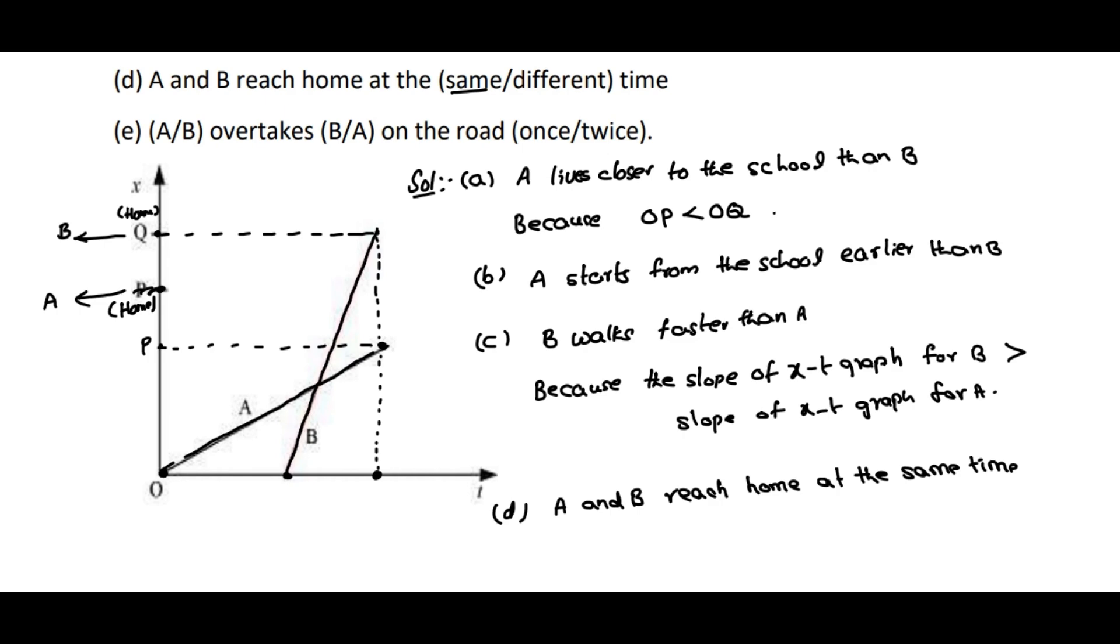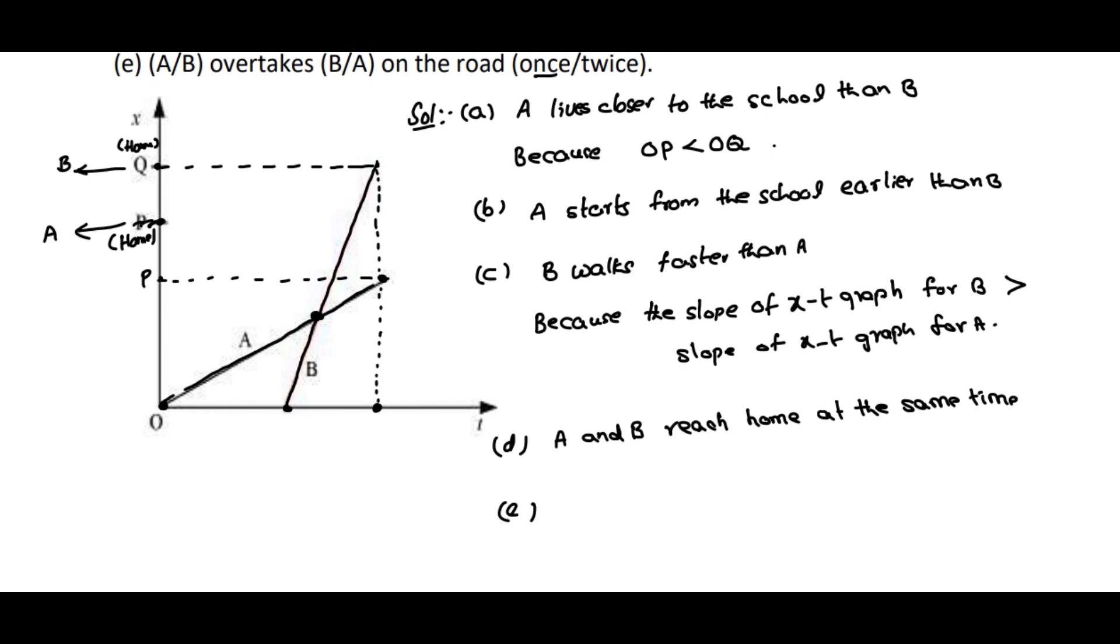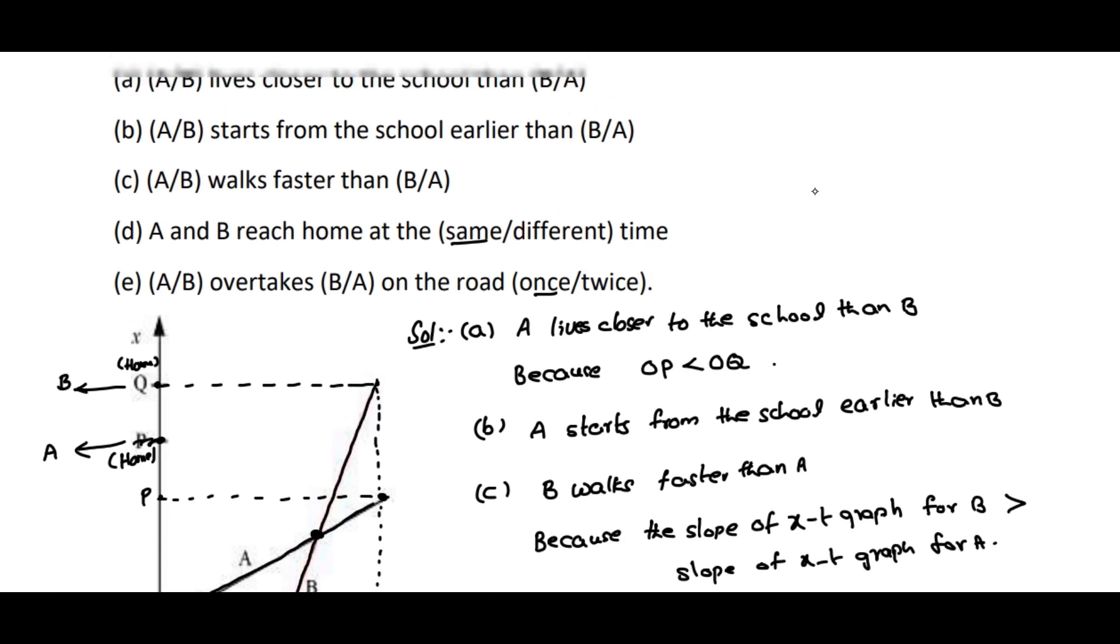E: A or B overtakes B or A on the road once or twice. If you check here, at one point the line related to A and the line related to B are intersecting only at one point, so it will overtake only once. But which one is overtaking which? The answer is B overtakes A on the road only once, because B started later compared to A, and the speed of B is higher compared to A. That's why B overtakes A. So these are the answers based on the graph we are discussing. Thank you.